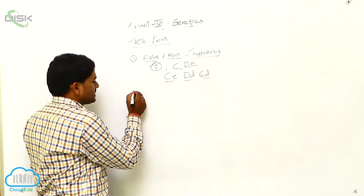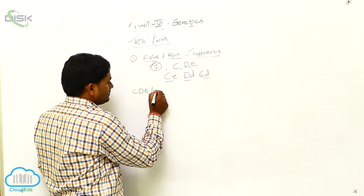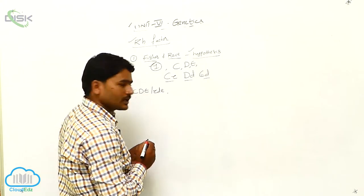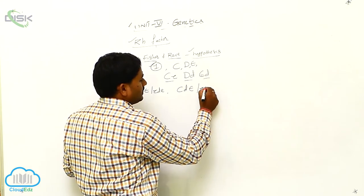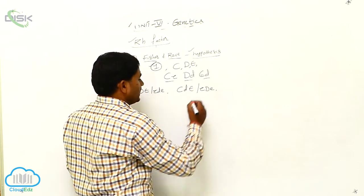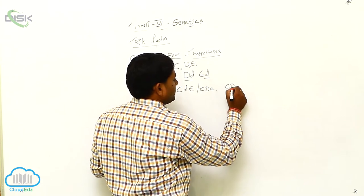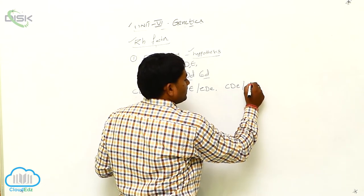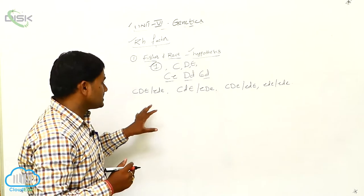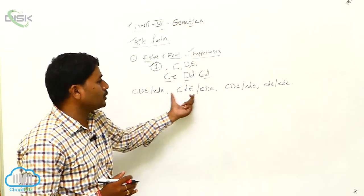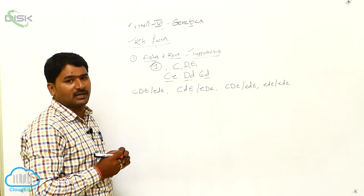For example, combinations such as CDE, CDE, CDe, CdE, cDE, cdE, and others are formed from these three pairs of alleles. This kind of nomenclature is called the CDE nomenclature.